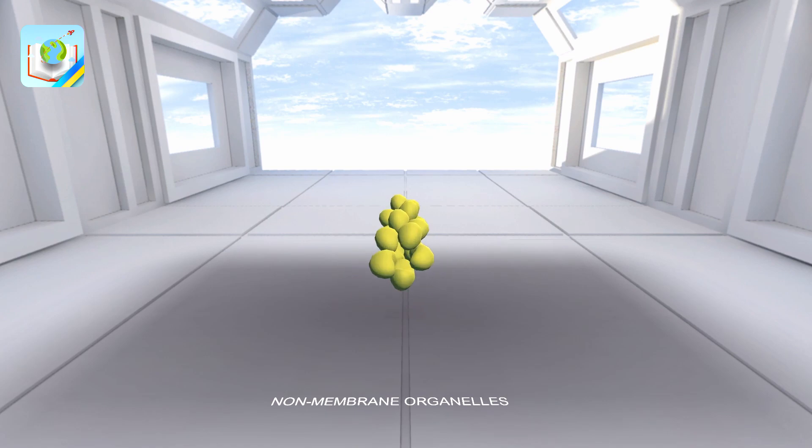Microfilaments are threads in the cytoplasm of all eukaryotic cells. Under the plasma membrane, microfilaments form a plexus. In the cytoplasm, cells form bundles of parallel-oriented threads or a three-dimensional gel, a base of a cytoskeleton.